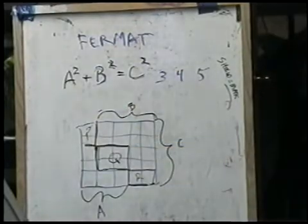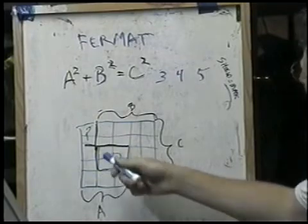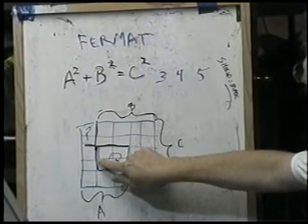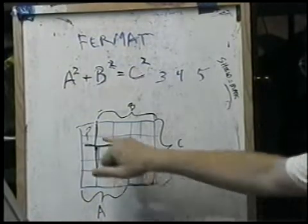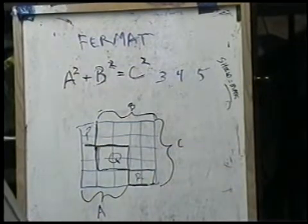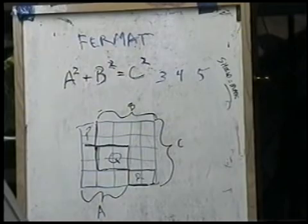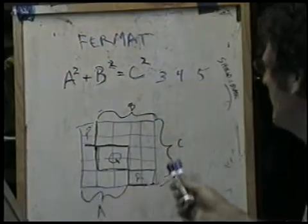If you can dig a chunk out of one of those squares, we call it Q, and redistribute that chunk to P and R, and then it fills in to make the C square.